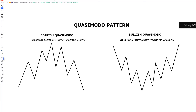This pattern changes the overall trend of the market. If you're able to spot the Quasimodo pattern, you'll be able to know the area price is likely going to reverse. I hope this lesson is one you would want to pay attention to, because if you're able to spot the Quasimodo pattern, you'll already know where price is going to reverse from. And trading price from a point of reversal, you're going to make a lot of money from the market.